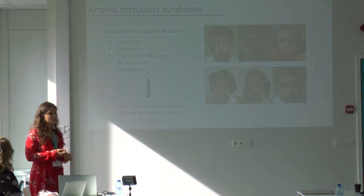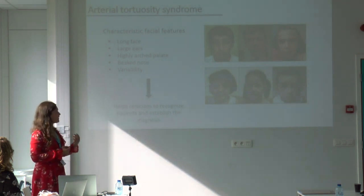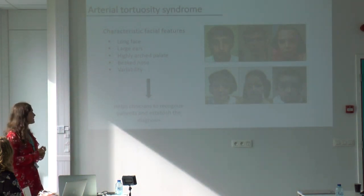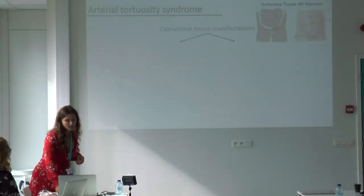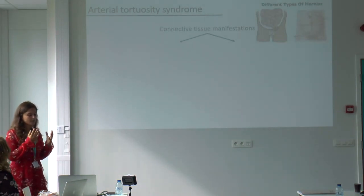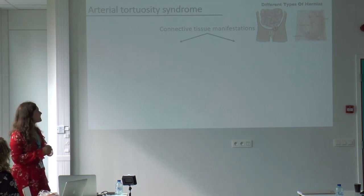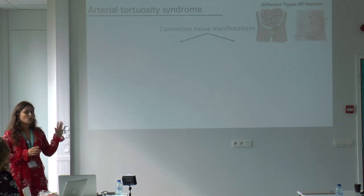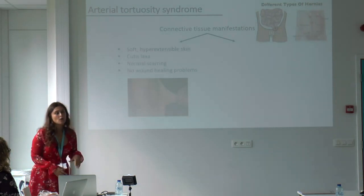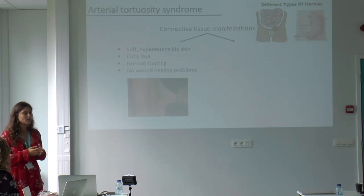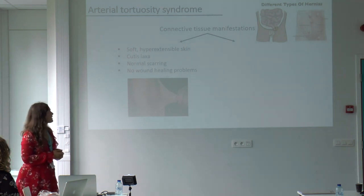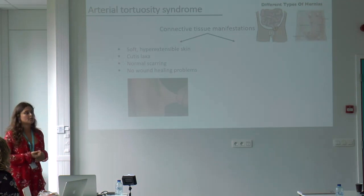It's very important to look at these different characteristics because it helps clinicians recognize ATS patients and ease the establishment of the diagnosis. A very important category of symptoms are the connective tissue manifestations. Many patients have soft, hyperextensible skin, or they can have loose, non-elastic skin like cutis laxa. We know that they also have normal scarring and no wound healing problems, which is really important if they undergo surgery or hurt themselves.